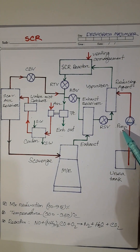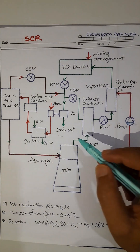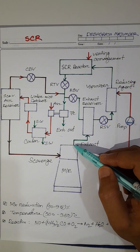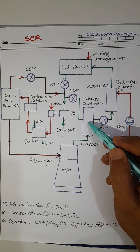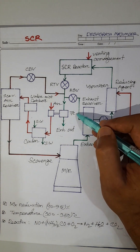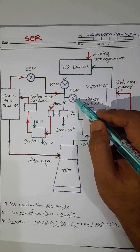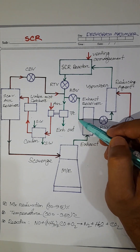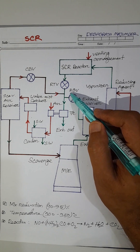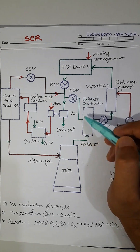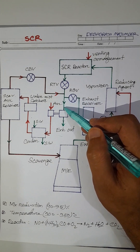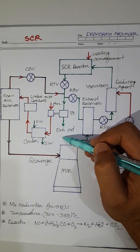Whenever the vessel is running in Tier 2 area, the exhaust gas coming from the main engine passes through this bypass valve. At that time, RBB is open — that means exhaust gas is bypassed. Reactor bypass is open and exhaust gas is bypassed, passes through the turbocharger, and goes out.